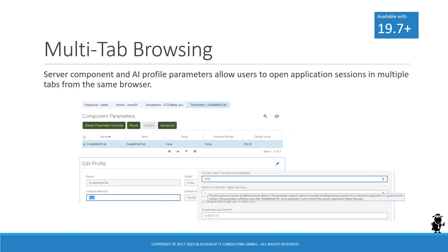Another feature you can optionally enable when upgrading to a modern Siebel version is multi-tab browsing, which allows users to open multiple sessions in multiple browser tabs — something not possible in earlier versions of Siebel CRM. Administrators need to enable this via a server component parameter and settings in the application interface profile. It is important to understand that this results in multiple sessions for the same user, much like using different devices or incognito windows; it is not the same session opened in multiple tabs.